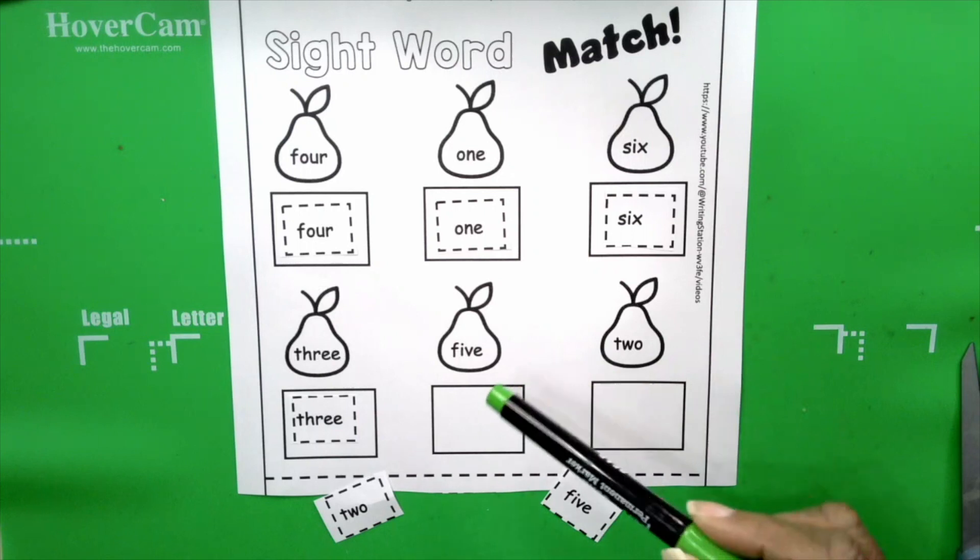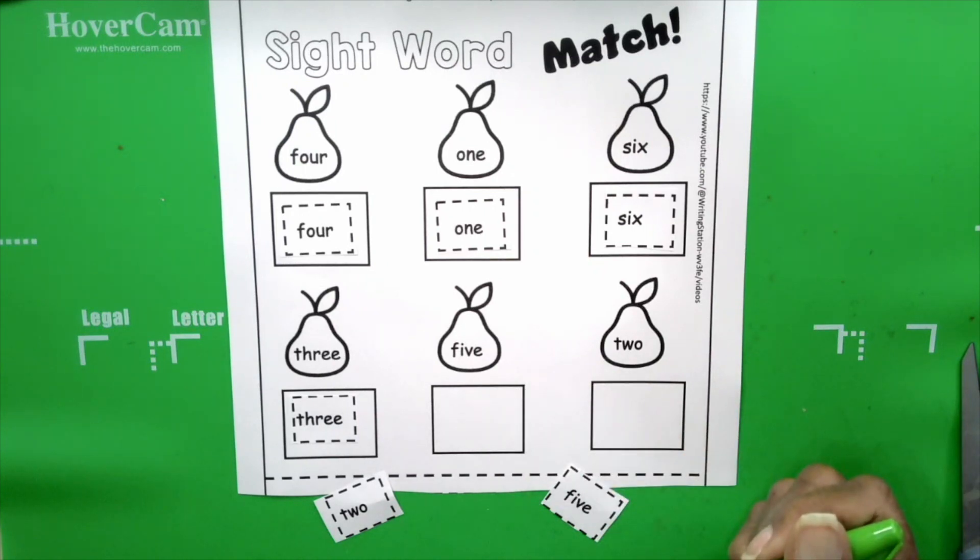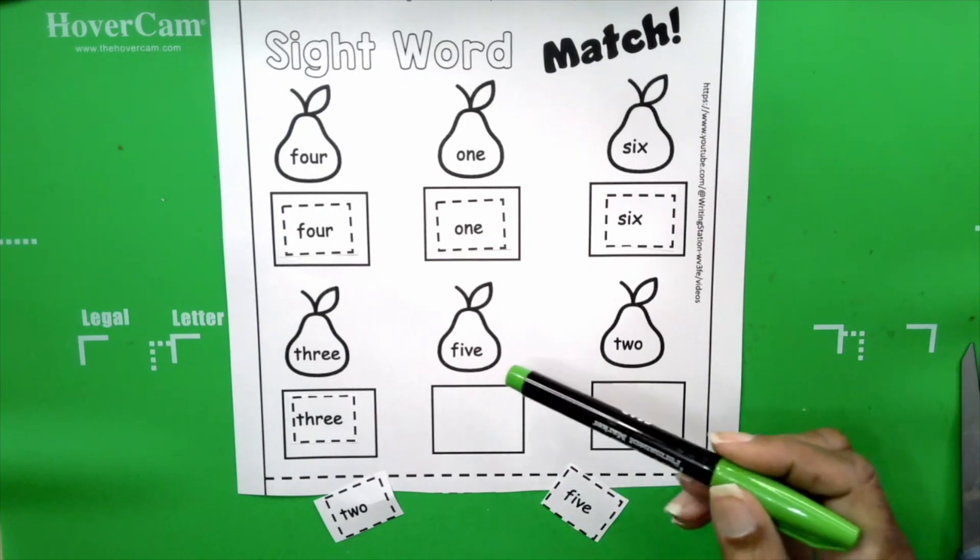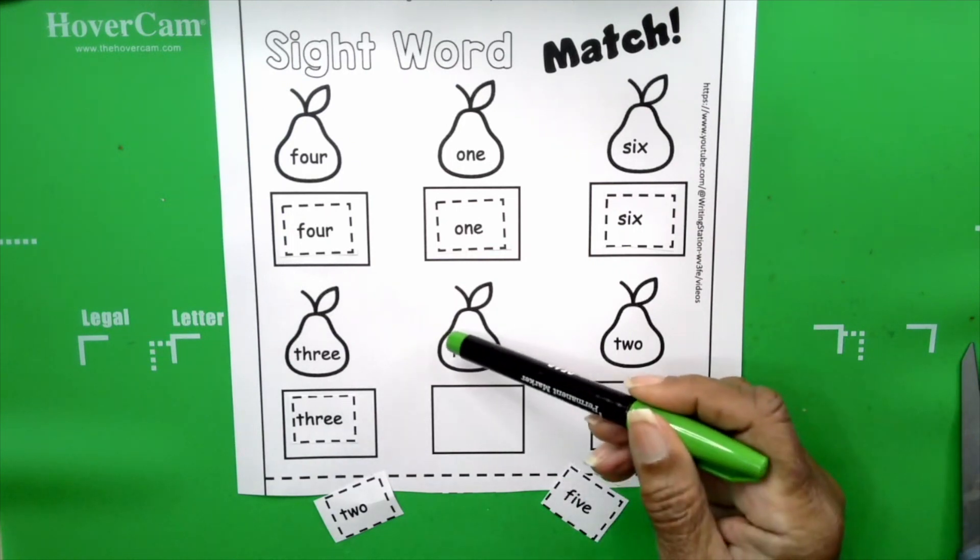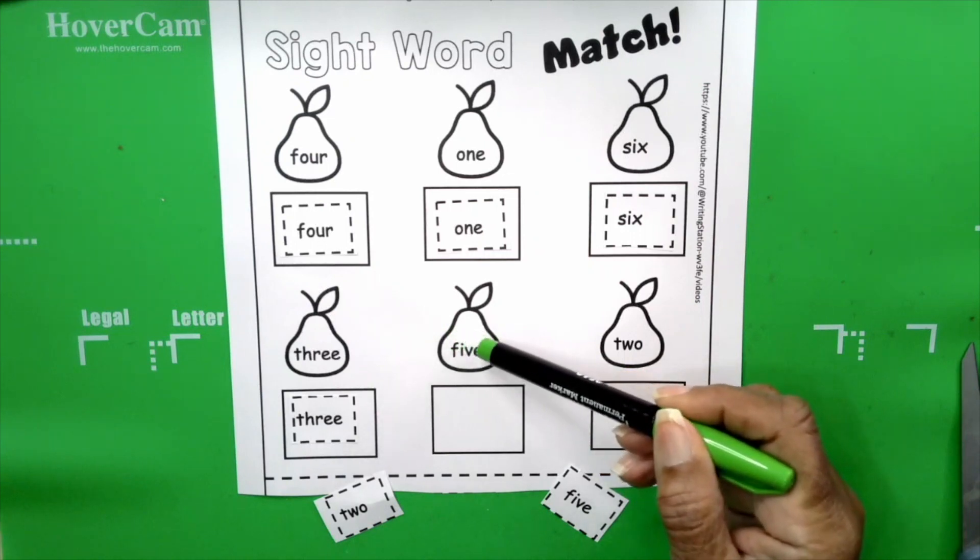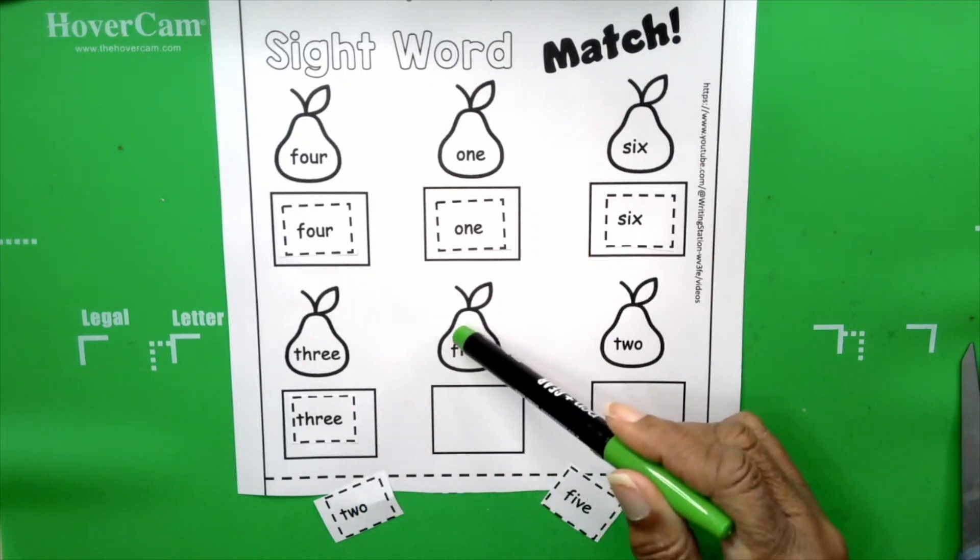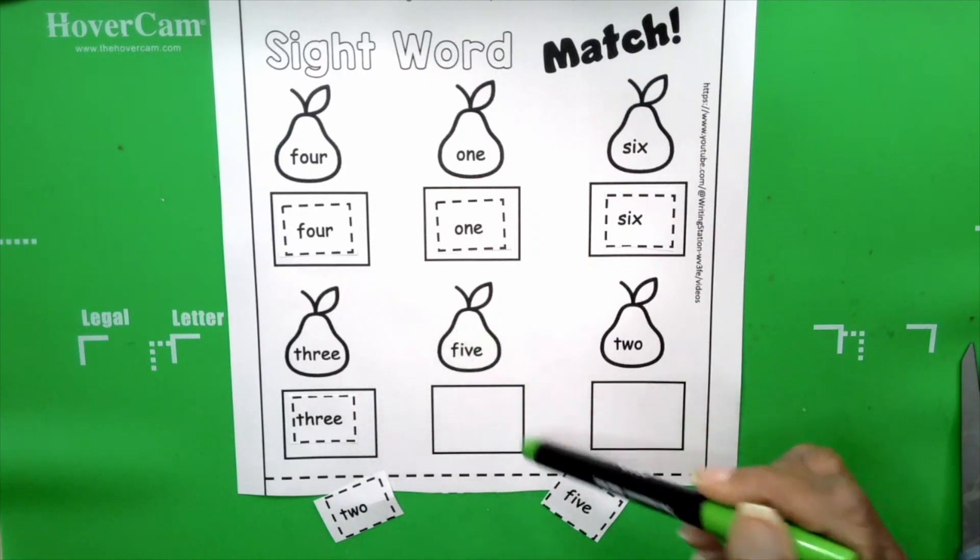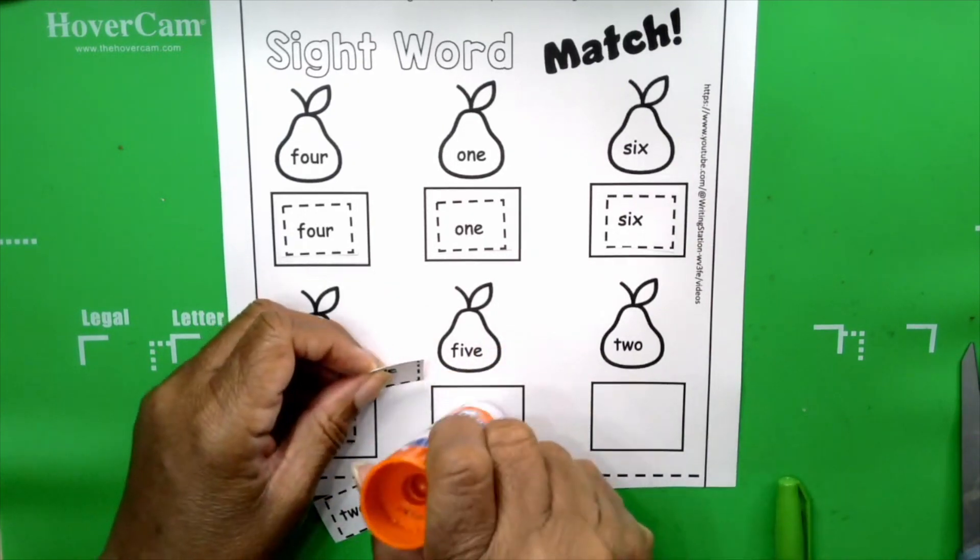Two words to the left. The next word is five. Five. Say it, boys and girls. Five. How do you spell five? The word five. F-I-V-E. Five. Do we have any words that start with F and has an I, a V, and an E? Yes. Right here. Five.